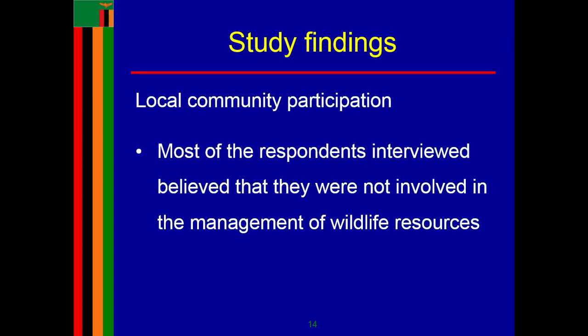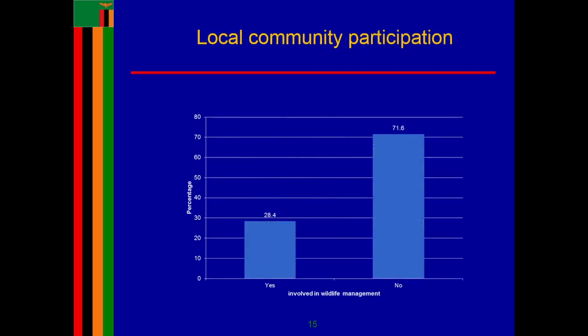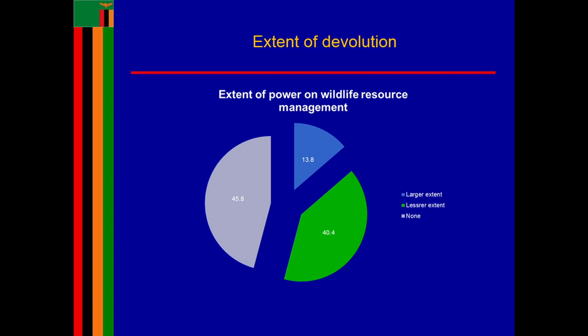Regarding local community participation, most of the respondents interviewed believed that they were not involved in the management of wildlife resources. As seen in the figure, 71.6 percent said they were not actively participating in community management of natural resources. Also, the extent of devolution leaves much to be desired: 45.8 percent said there was no devolution of power to the local community, and 40.4 percent said there was less devolution.